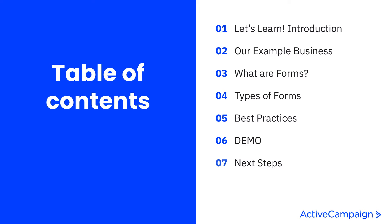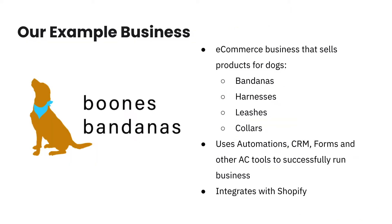We'll circle back into the presentation for next steps once you've learned about forms. Our example business is named Boone's Bandanas — it's an e-commerce business that sells different products for dogs. It also has a non-profit side where they buy a bandana and donate a bandana to animal shelters. We're using ActiveCampaign's tools including automations, CRM, campaigns, forms, and specifically integrating with a Shopify store.